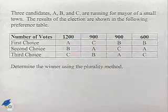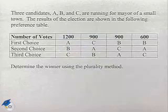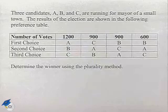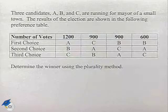Now let's look at one of our voting methods. Three candidates, A, B, and C, are running for mayor of a small town. The results of the election are shown in the following preference table.